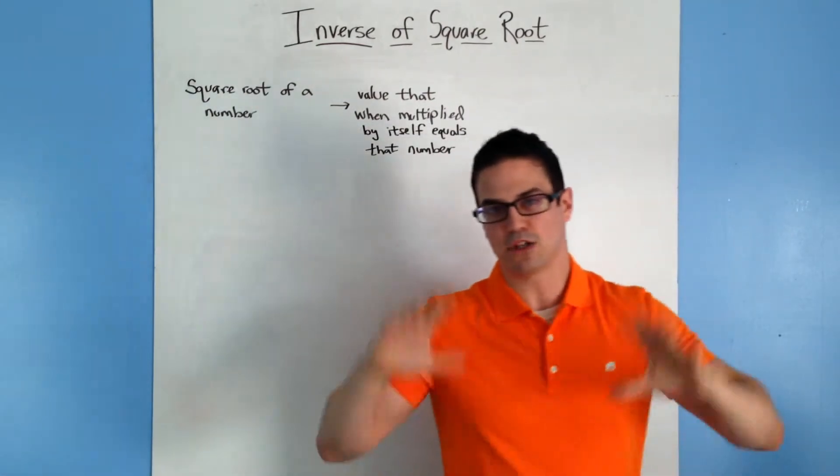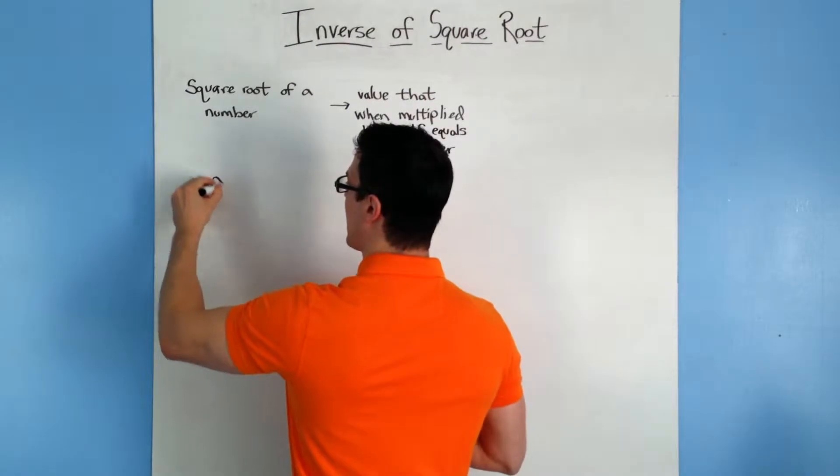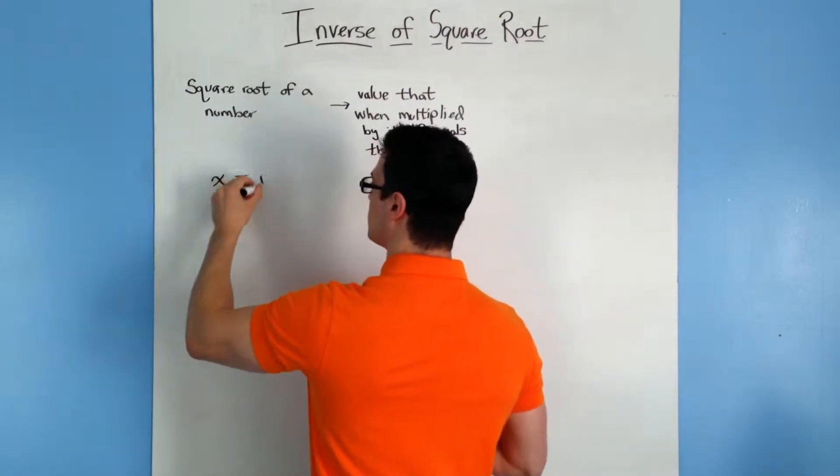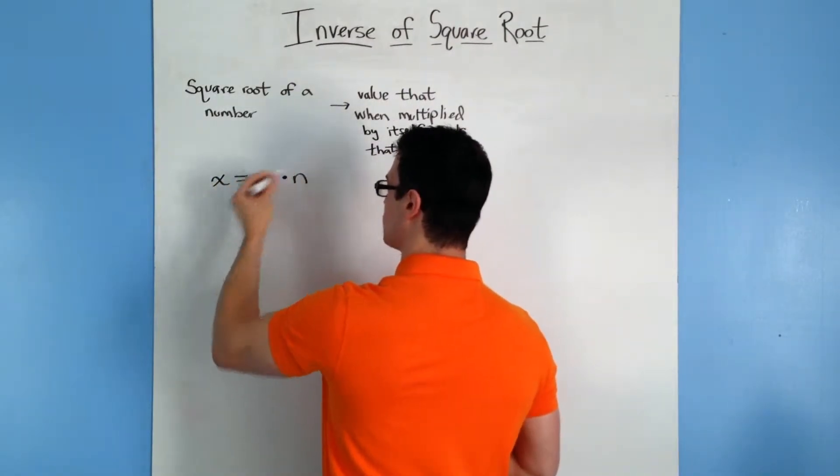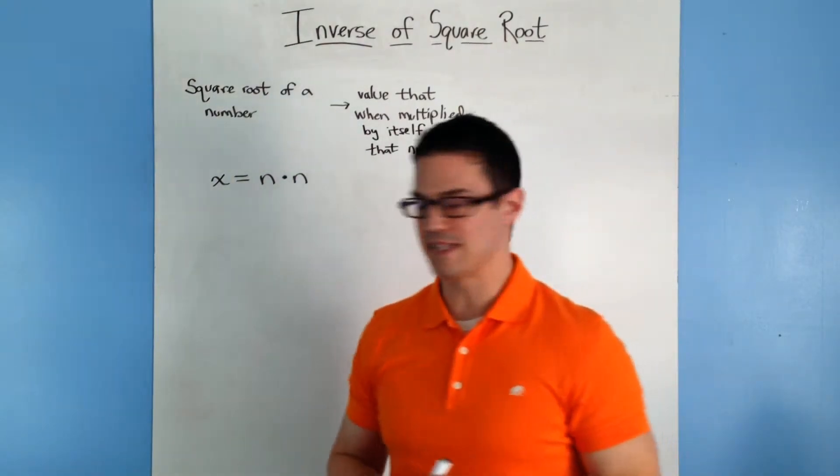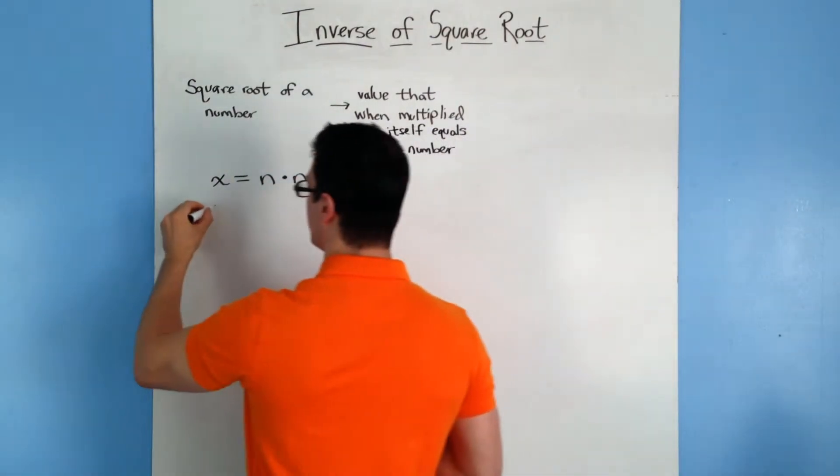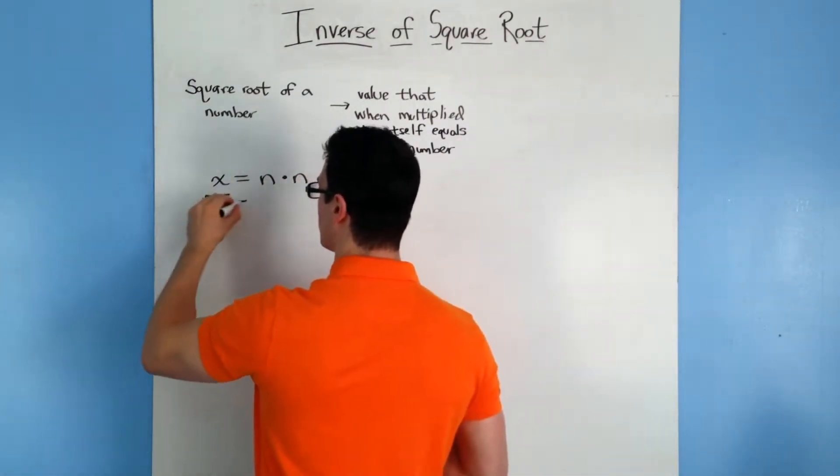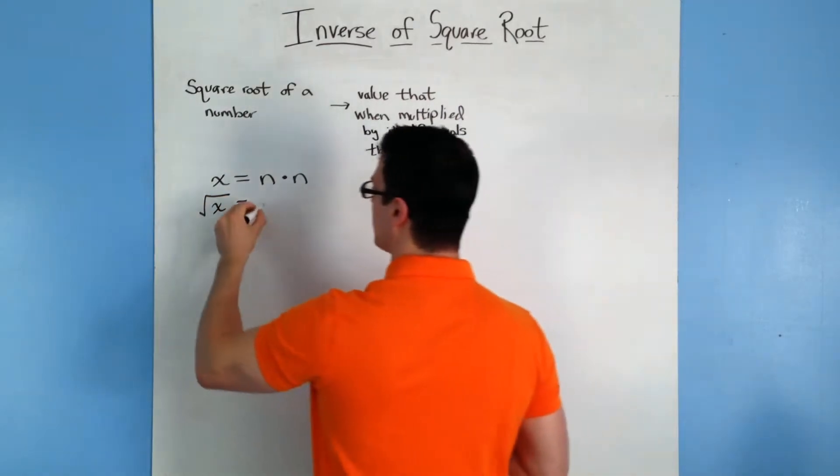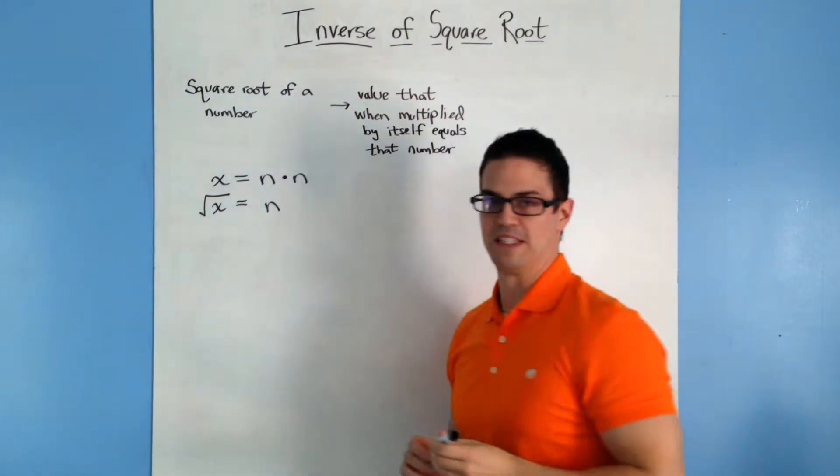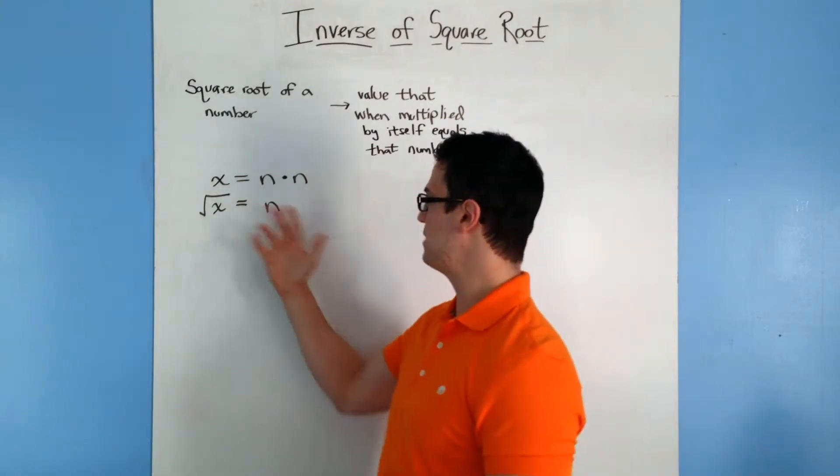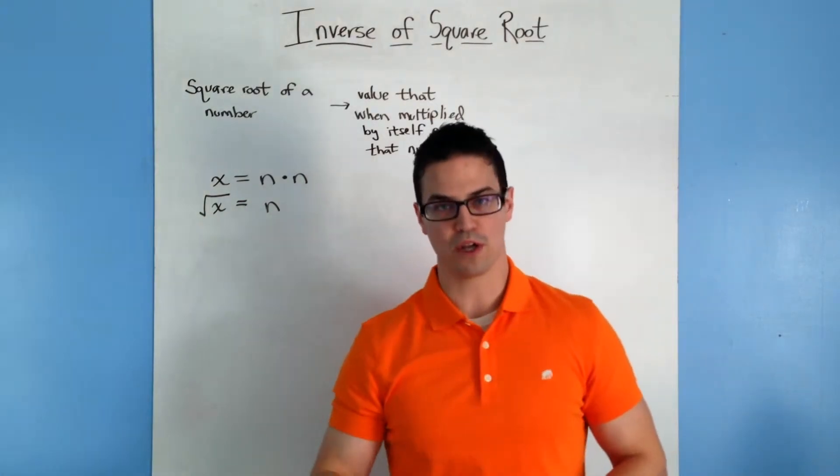So if you wanted to write it mathematically, it might look something like this. Say you have some number x, it's equal to n times n, so some number multiplied by itself. The square root of x, based on our definition up here, would be equal to just one of these n's. So that would be based on our definition of a square root.